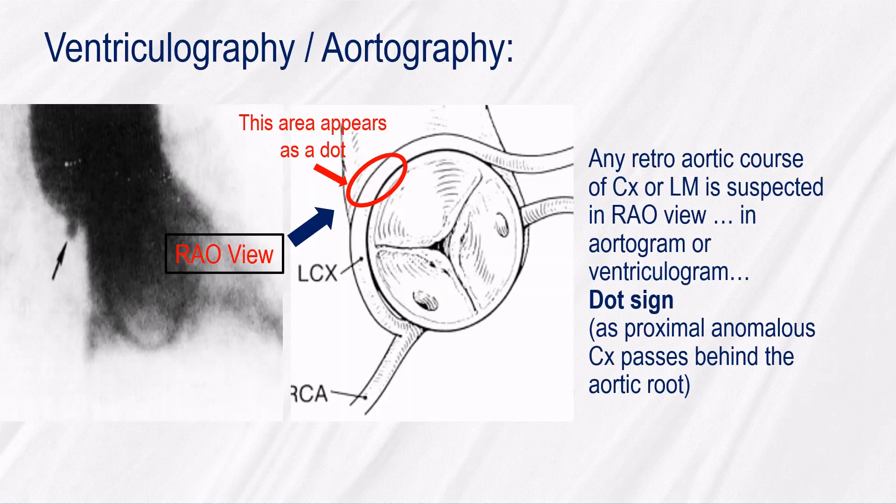Regarding diagnosis by orthography or ventaglography, any retro-aortic course of CX or left main is suspected in the RAO view, in an aortogram or ventaglogram, by the dot sign, as the proximal anomalous CX passes behind the aortic root.